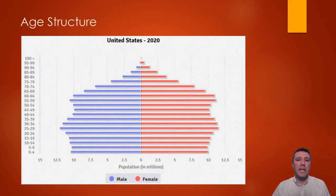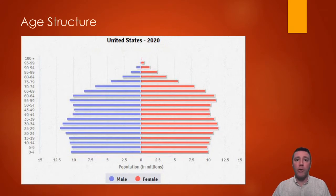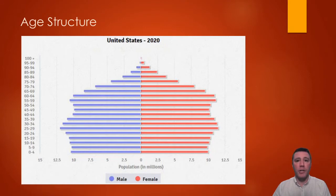With any age structure diagram, we can also imagine a population existing in three much larger categories. First are the pre-reproductive age individuals — those in the teenage years and below. The second group is those people in their 20s, 30s, and 40s who are actively reproducing in their child-producing years. The final group are those individuals in their late 40s, 50s, and up who are no longer having children.